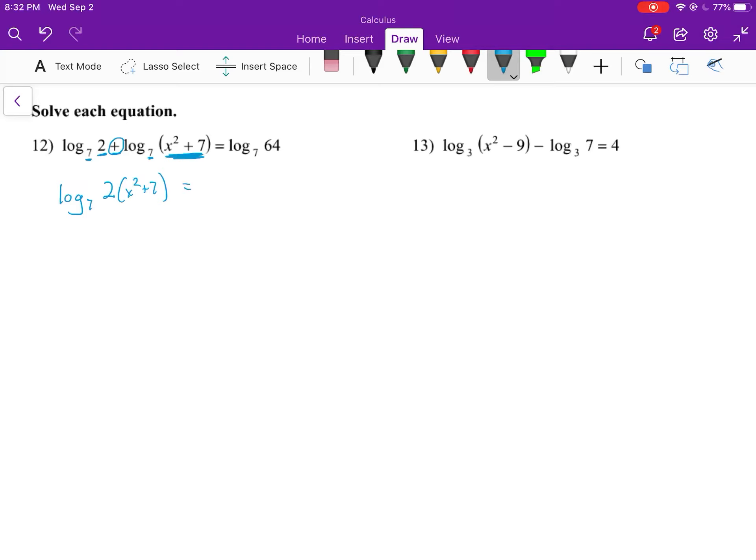So log base 7 of 2 times (x² + 7) equals log base 7 of 64. We have log base 7 of some value equals log base 7 of some value. Well, those two values have to be equal to each other because it's both log base 7. So we can just have 2 times (x² + 7) equals 64, and then we'll solve this.